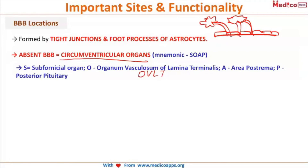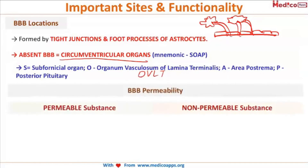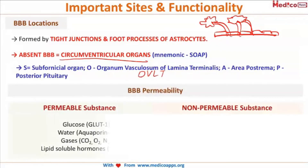When we think about the blood-brain barrier, the next important point is its permeability — which structures can permeate through it and which cannot. The permeable substances include glucose, with its transporter GLUT-1 — kindly remember it is GLUT-1, as it can be asked as an exam question.